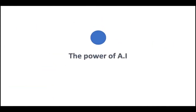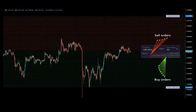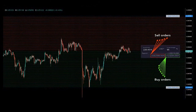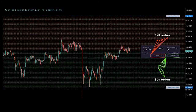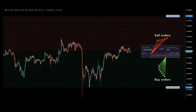We take advantage of the power of artificial intelligence, which allows us to have a fully configured trading algorithm. It is called the grid mechanism — the one we are using, implementing, and developing.